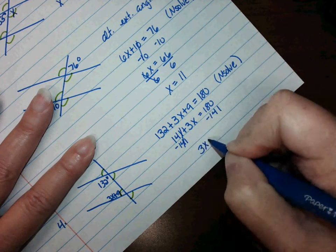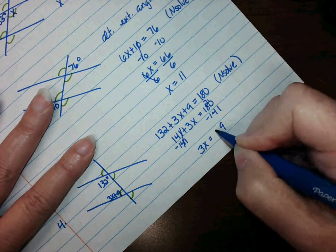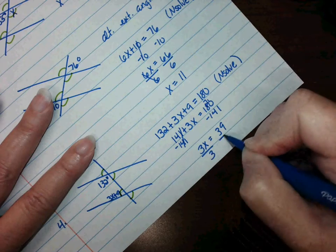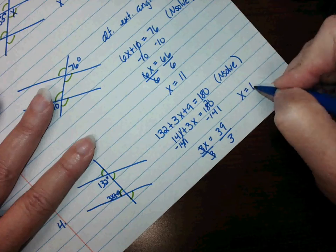And you get 3x equals 39, and then you divide by 3 and you get x equals 13.